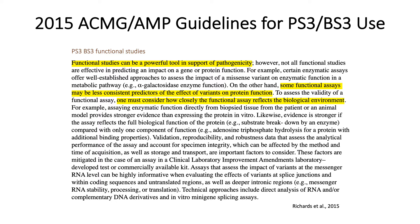For example, the guidelines suggest that the predictive ability of an assay can be impacted by how closely the functional assay reflects the true biological environment of the protein, and specifically point out that the experimental material used in the assay, such as a biopsy tissue or a protein expressed in vitro, can alter the ability of an assay to predict the effect of a variant. The ability of an assay to assess the function of a given protein is also important to consider, as some assays may only test one component of protein function, while others can more fully assess the complete biological function.